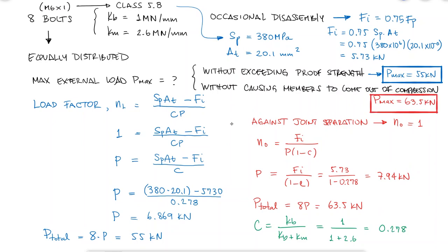These values mean that the stress within the bolt would reach the proof strength before the members start separating, and of course the advised maximum external load should not be greater than 55 kilonewtons. We'll see you in the next one.